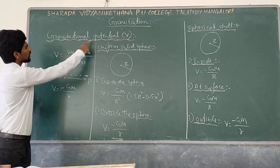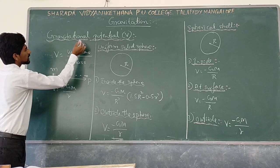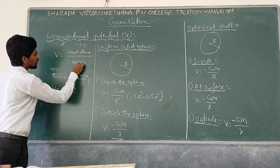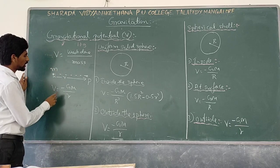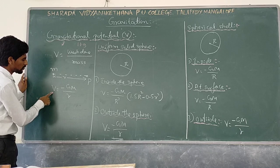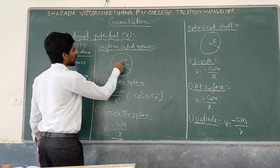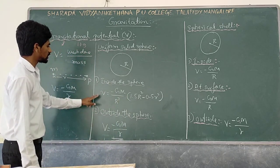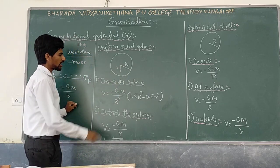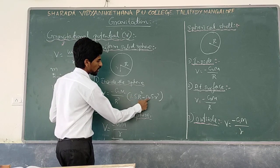Next is gravitational potential. The work done in bringing a unit mass from infinity to a point against the gravitational field is called gravitational potential. If the mass is M at a point, the gravitational potential at point P is given by minus GM by R, where R is the distance from the mass to that point. For a uniform solid sphere of radius R, the gravitational potential inside the sphere is V equals minus GM by R cube into 1.5 R squared minus 0.5 r squared.